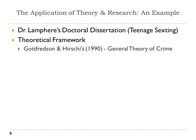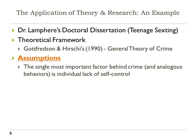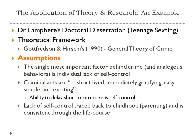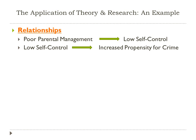The theoretical framework I used to study sexting was Gottfredson and Hirschi's 1990 General Theory of Crime. The assumptions are that the single most important factor behind crime and analogous behaviors is individual lack of self-control, and that criminal acts are short-lived, immediately gratifying, easy, simple, and exciting. The ability to delay short-term desire is referred to as self-control. Lack of self-control can be traced back to childhood, and parenting is consistent through the life course. The relationships in the theory are that poor parental management leads to low self-control, and low self-control leads to increased propensity for criminal behavior.